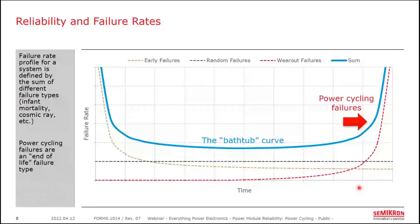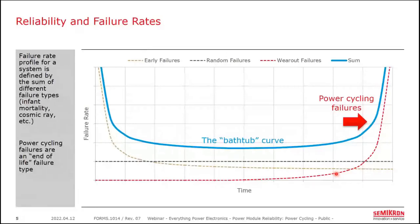If we consider a population of installed product operating in the field, there is a graphical way of describing the failure rate at any given moment in time. Reliability engineers call this the bathtub curve, and it's the sum of three failure types: early or infant mortality failures such as manufacturing defects; random failures constant throughout the product life, like cosmic radiation for power semiconductors; and wearout, which defines end of life. The power cycling failures we'll discuss today are this third failure type.